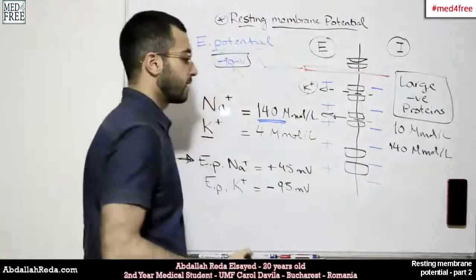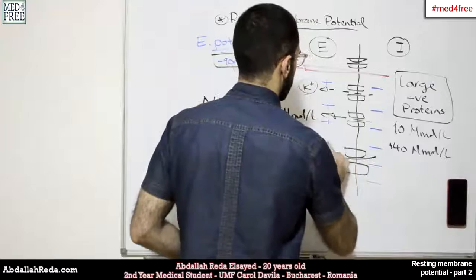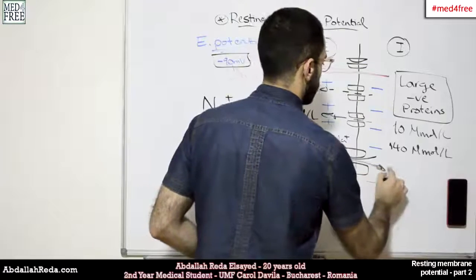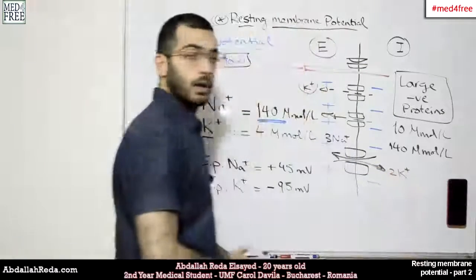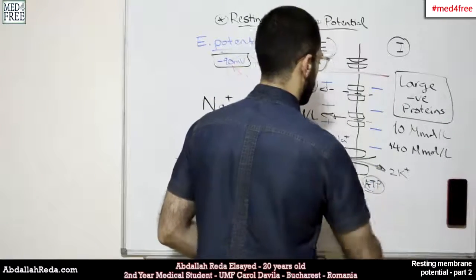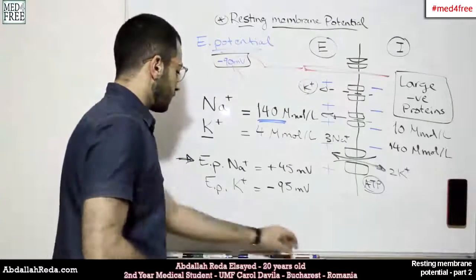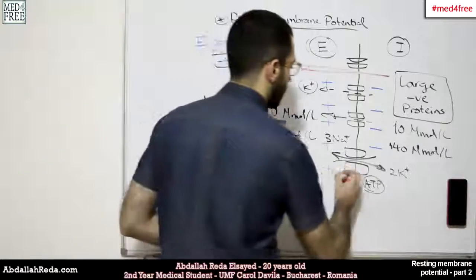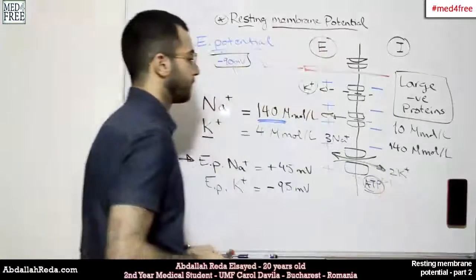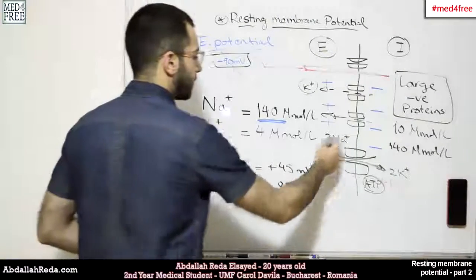What this pump does is pump three sodium ions outside the cell and two potassium ions inside the cell, using one ATP molecule. During this action, we can have some leakage of sodium inside the cell.